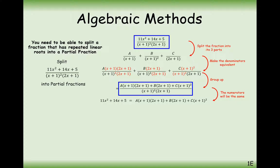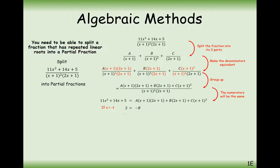We need to pick sneaky values of x so that some terms disappear. If we choose x equals minus 1, the A term and C term will disappear, leaving just the B term — and we get B equals minus 2. If we substitute x equals minus 0.5, that gets rid of the A and B terms. Be careful: compute minus 0.5 plus 1, find that value, then square it. We get 0.25c, so dividing by 0.25, c equals 3.